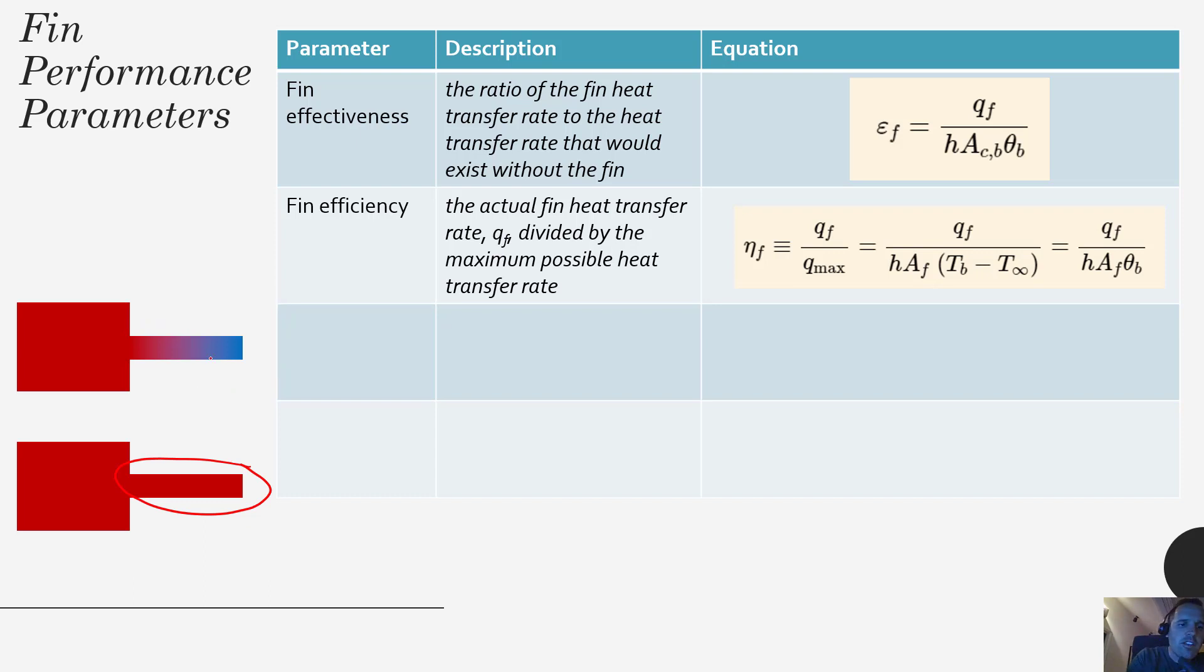So the fin efficiency is what's happening here, divided by what's happening here. And again in each, well in this scenario we're considering just the surface area of the fins themselves. So this fin effectiveness tends to be a number greater than 1 because that area of the exposed base, if you dramatically multiply the surface area, well then you're definitely going to do better than that.